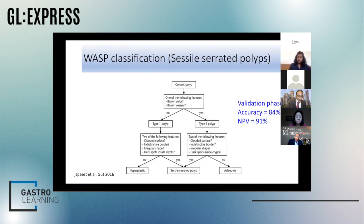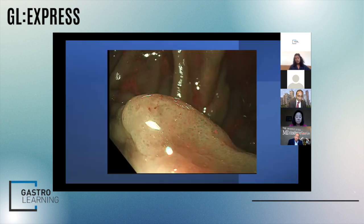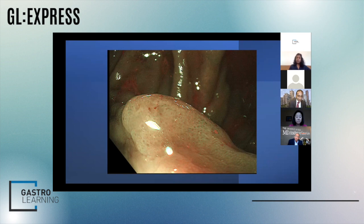When we talk about polyps with malignant potential, we can't forget about sessile serrated lesions. The WASP classification by the Dutch group is a very good way of recognizing their features. With this lesion, you can see there's a mucus cap over it, dark spots within the pits — quite characteristic features — and a fairly indistinct border. When you see these features, this points you towards a sessile serrated lesion, and it's important to recognize these polyp types separately.